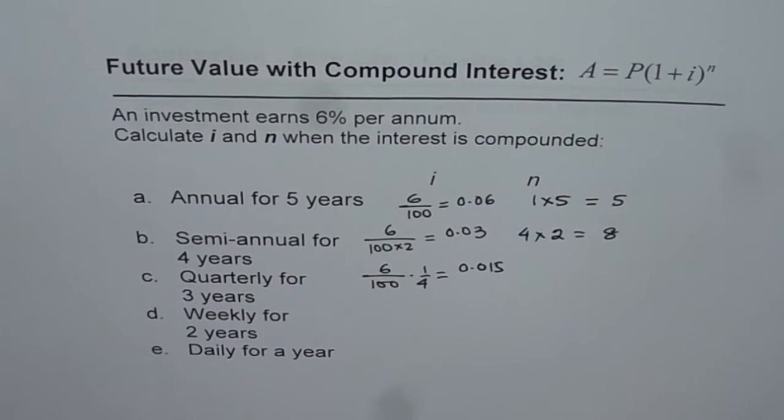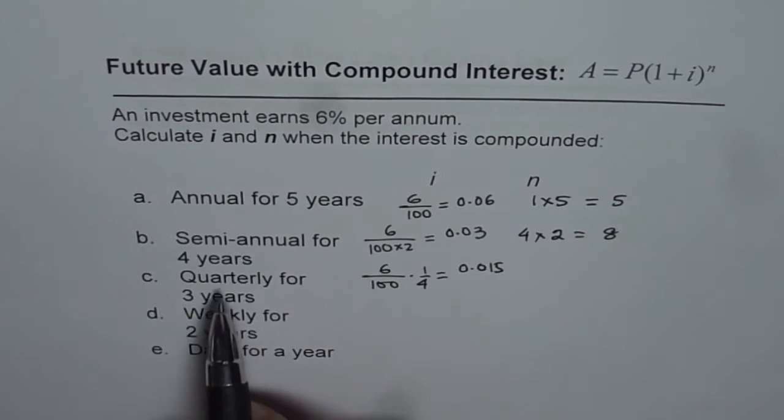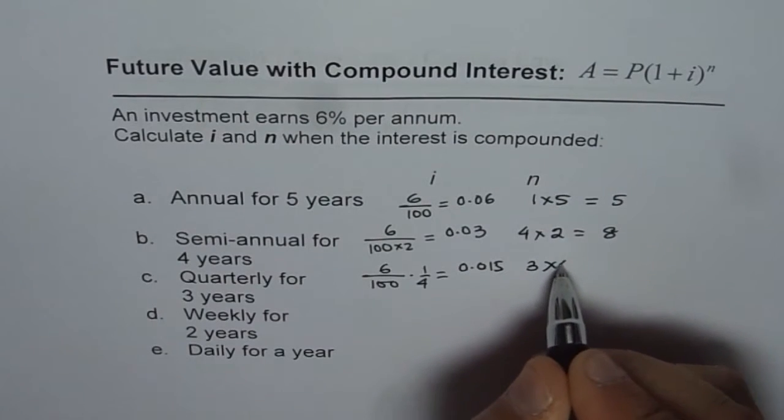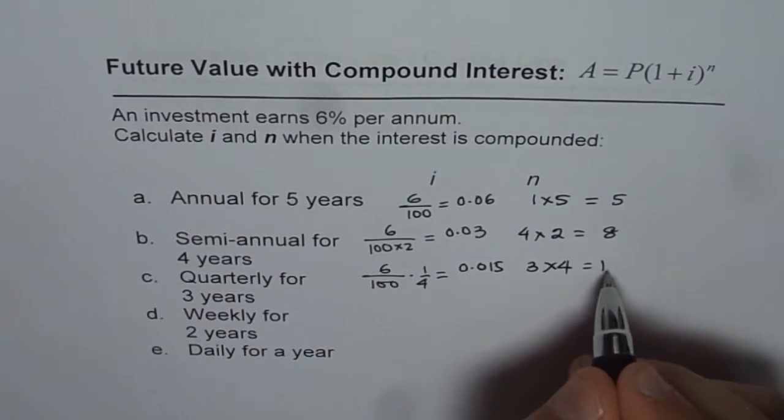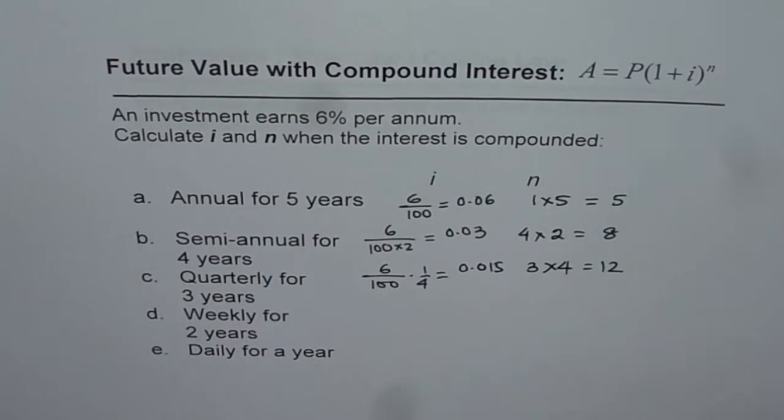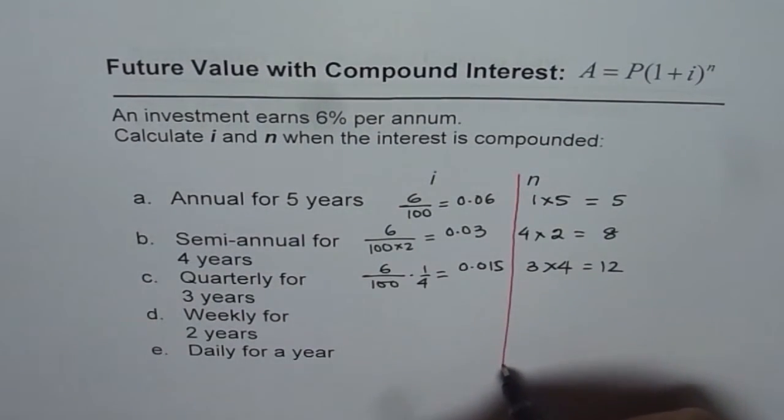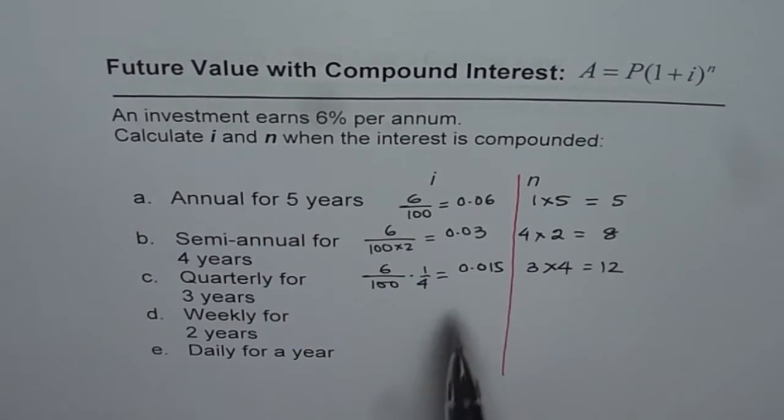Normally you should use calculator to calculate these values. Quarterly for 3 years. That means every year 4 times. So the value of n is 12. So that is how we have to calculate the values of i and n. So I hope that is absolutely clear.